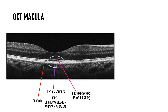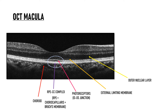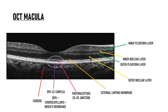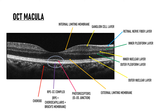The next hyper-reflective line is the external limiting membrane. Then comes the outer nuclear layer, which is hypo-reflective. The layer after the outer nuclear layer is the outer plexiform layer, which is hyper-reflective. The layer next to it is hypo-reflective — that is the inner nuclear layer. The hyper-reflective layer next to the inner nuclear layer is the inner plexiform layer. Then comes the ganglion cell layer, followed by the retinal nerve fiber layer, both hyper-reflective. The innermost layer of retina is the internal limiting membrane, also hyper-reflective.